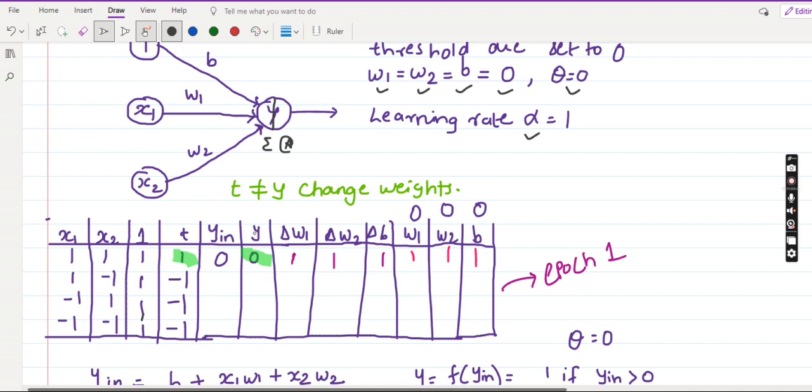Y is the output that we are going to get by calculation using this network. Delta w1, delta w2, and delta bias are the change in the weights. w1, w2, and bias are the previous weights. So initially weights since they are 0, set all the initial weights to 0.